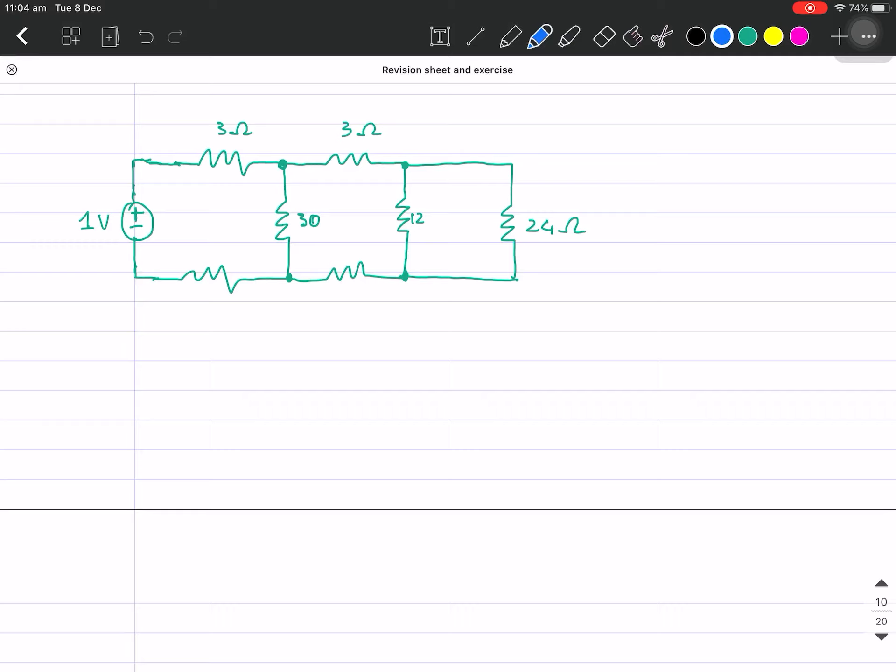We'll work out KVL around the loops and solve for the system. So here we go, I'm gonna label this one as i1, this one i2, and this one is i3. Remember, three of these need to be in the same way. I'm taking a look at the clockwise. After that, we name this one as this way.